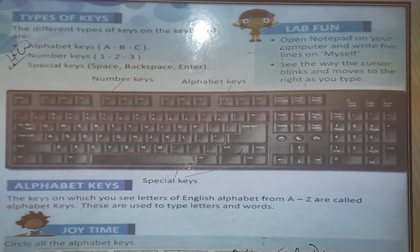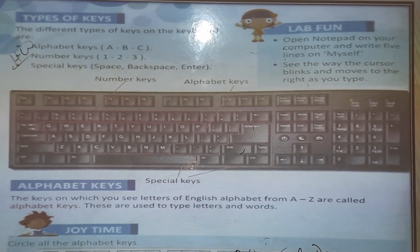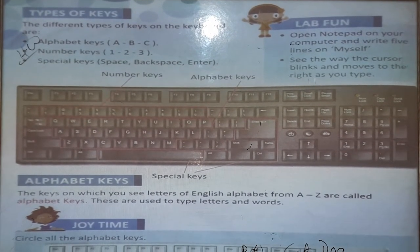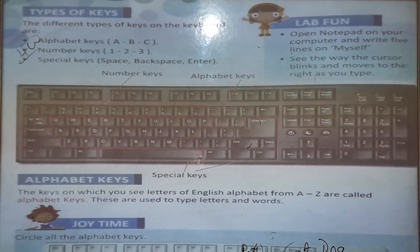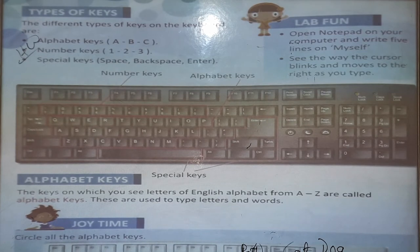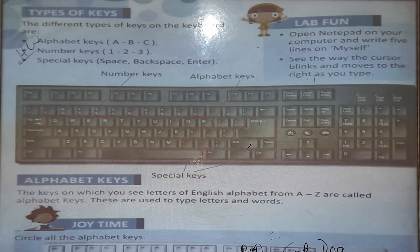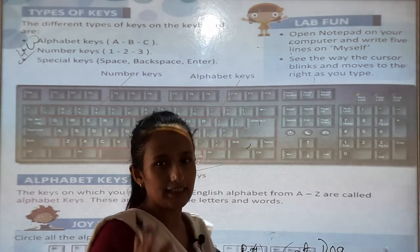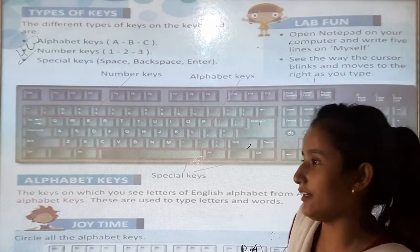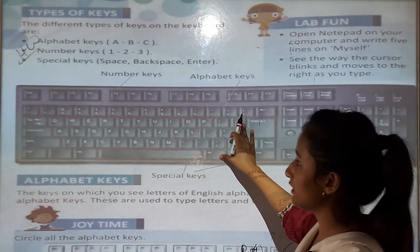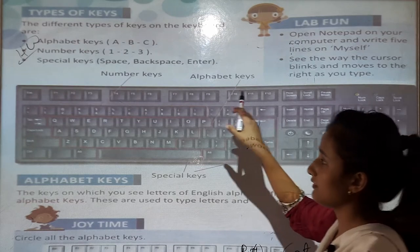The different types of keys on the keyboard are: alphabet keys (A, B, C), number keys (1, 2, 3), and special keys — space bar, backspace, and enter key. Alphabet keys means there are 26 letters. So in a keyboard there are 26 alphabetical keys.